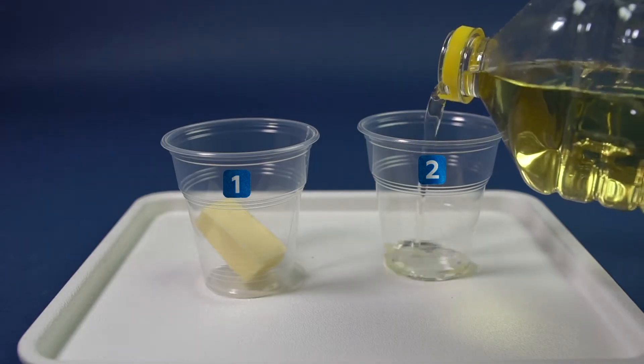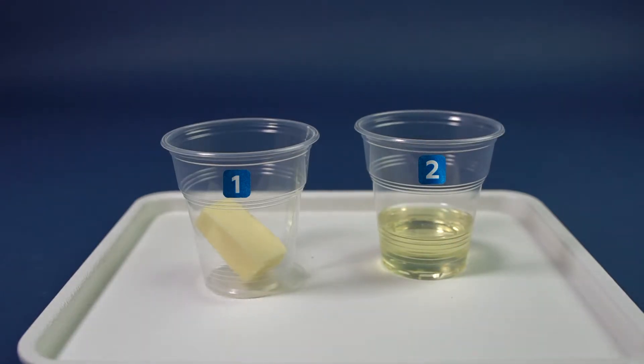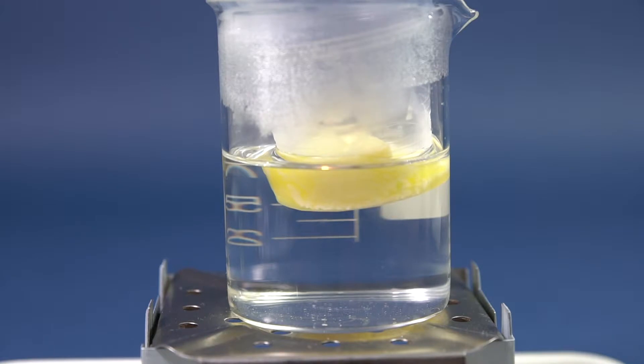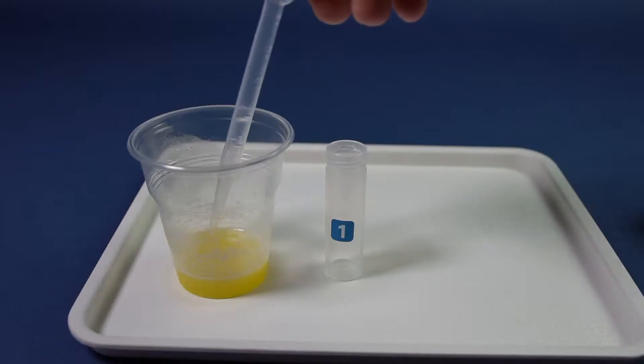Take two plastic cups. Put a piece of butter into the first one and pour a little vegetable oil in the second. To liquefy the butter, melt it on a water bath.